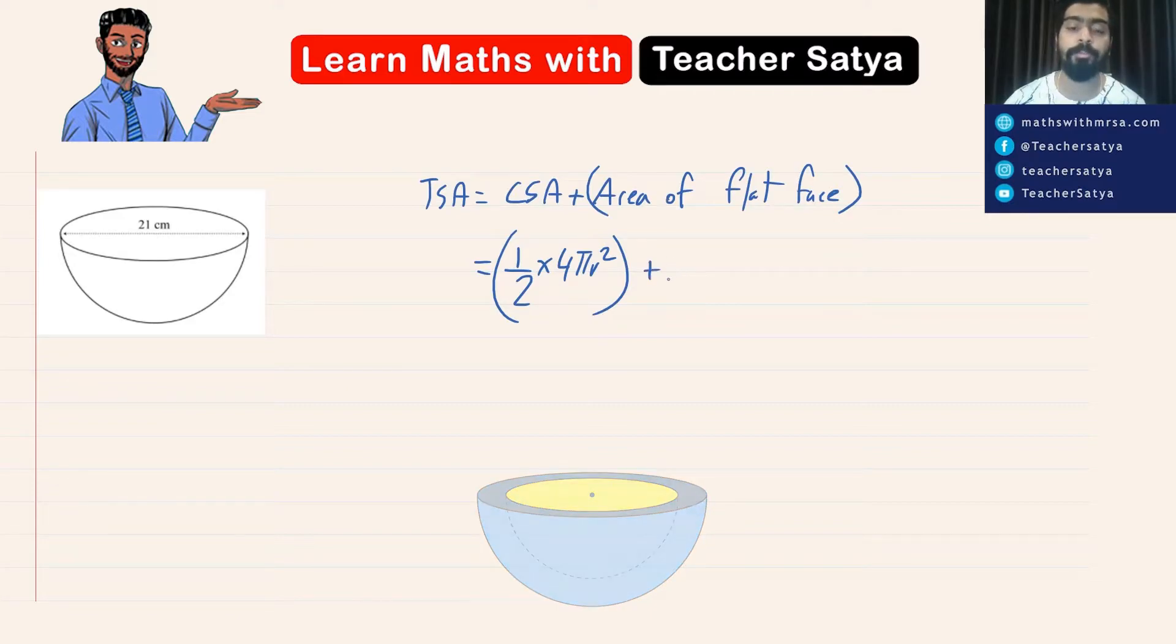And then the area of the flat face would be pi r squared as the flat face is a circle. Right guys?